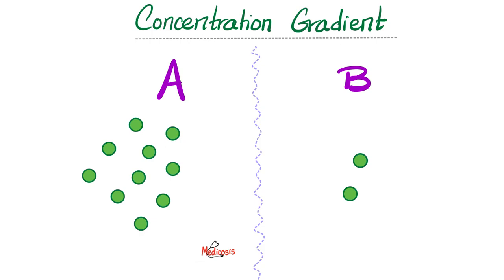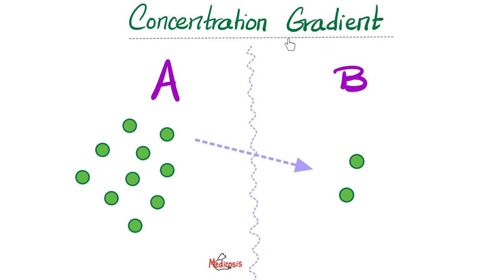Do you remember the concept of concentration gradient? Imagine that you have two compartments, A and B, with a thin semi-permeable membrane in between. Compartment A has more crap than compartment B — the crap will pass from A to B. Same concept applies for air pressure: if the pressure is higher in California than Arizona, wind is going to blow from California to Arizona. You go from high pressure to low pressure, from high concentration gradient to low concentration gradient.